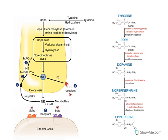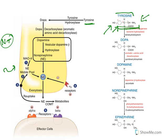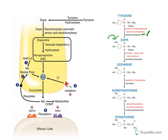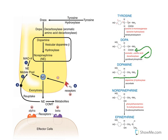Neurotransmission occurs at the end of the neuron. Synthesis starts with the amino acid tyrosine, which is para-hydroxy phenylalanine — a phenyl ring with an alanine side chain, plus a para-position hydroxyl group. In the presence of the enzyme tyrosine hydroxylase, another hydroxyl group is added to produce DOPA (dihydroxyphenylalanine). Next, the enzyme decarboxylase removes the carboxylic acid group, yielding dopamine — which has the amine but not the acid.